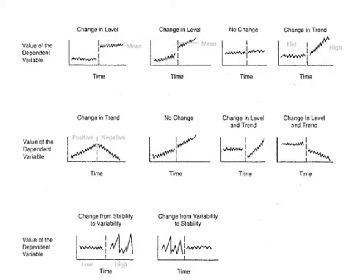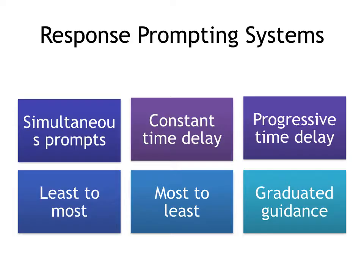Here's an example graph. Let's say a teacher wants to improve a child's social interaction skills. During baseline, the mean was really low, the trend was flat, and there was low variability — very flat. During the intervention phase, the mean increased, the trend was flat, and variability was also low. So we can tell the intervention was effective and controlled the behavior change. We use these three terms — level, trend, variability — to interpret the graph.